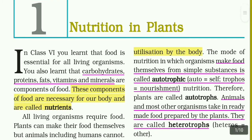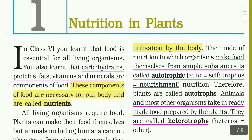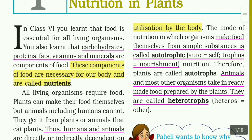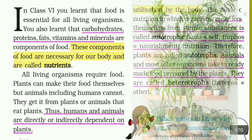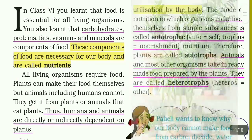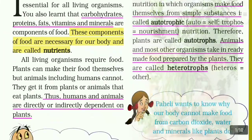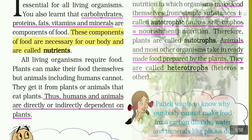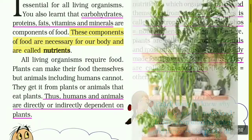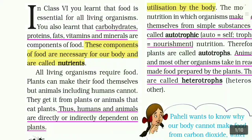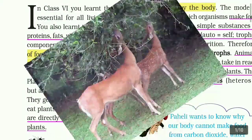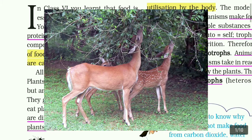The components that we have in a living organism are called nutrients. All living organisms require food. Plants can make their food themselves, but animals including humans cannot. Animals get food from plants or animals that eat plants. Thus, humans and animals are directly or indirectly dependent on plants.